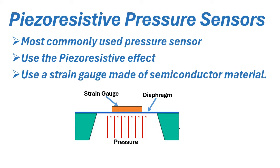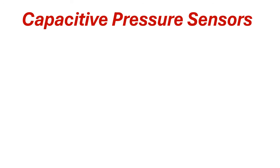When pressure is applied to the diaphragm, the strain gauge is stressed along with the diaphragm. When the strain gauge is stressed, its electrical resistance changes. This change in resistance corresponds to the applied pressure. This is the basic working principle of the piezo resistive pressure sensor.